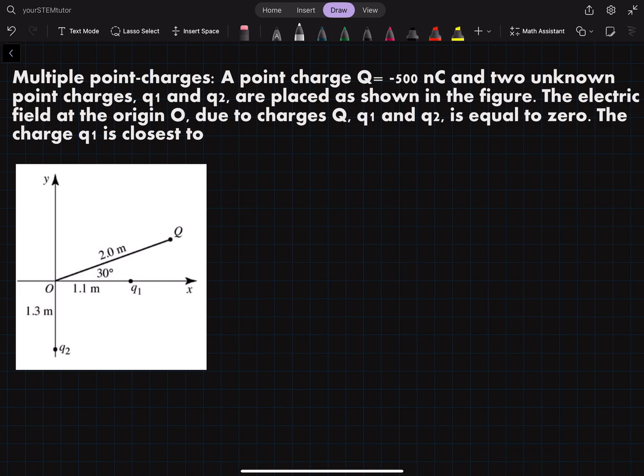So our question is a point charge Q equals negative 500 nanocoulombs and two unknown point charges q1 and q2 are placed as shown in the figure.